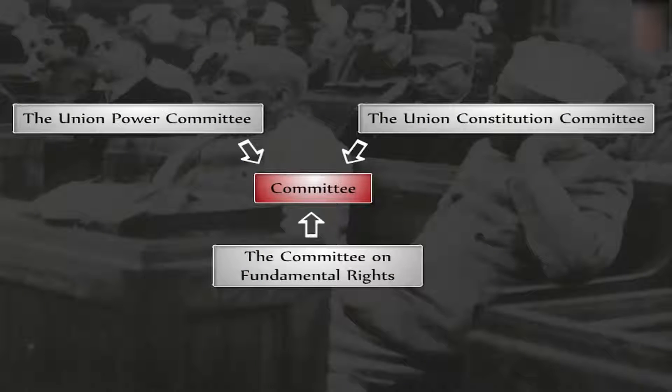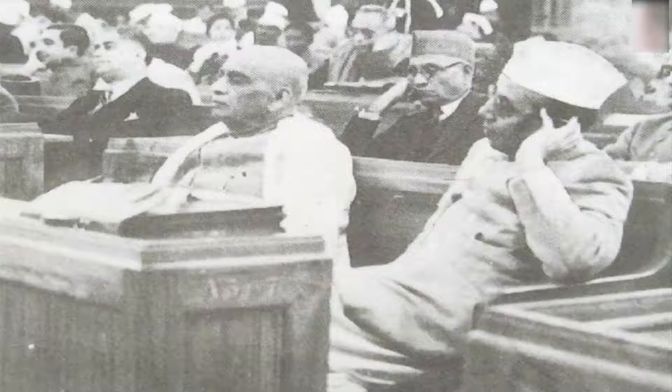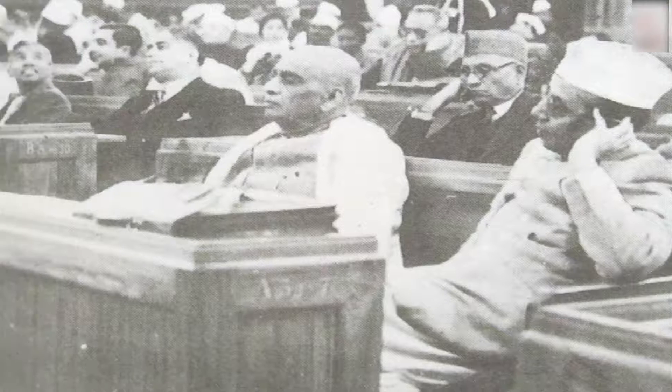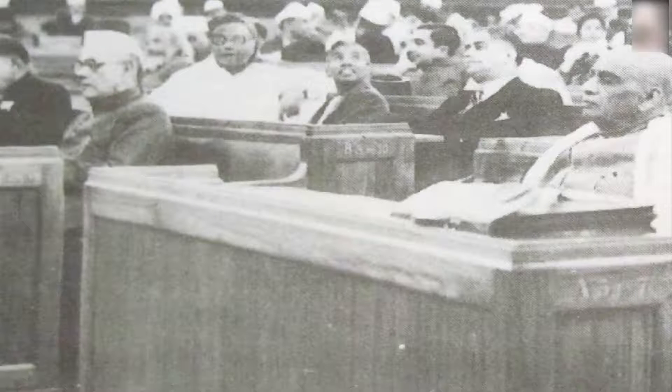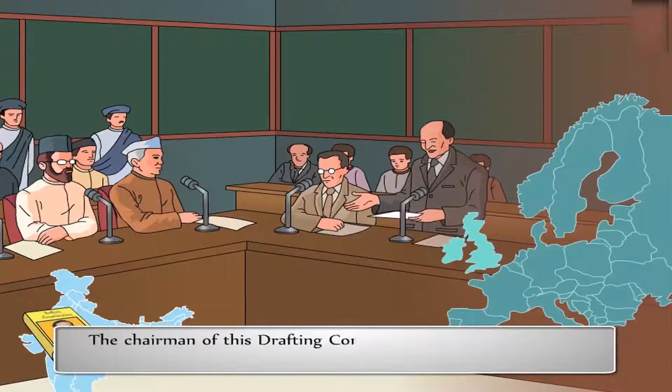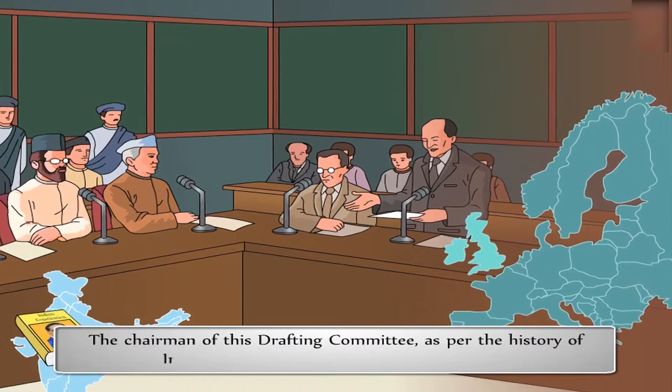The making of the Indian Constitution involved several meetings of three committees: the Union Powers Committee, the Union Constitution Committee, and the Committee on Fundamental Rights. After observing the reports passed by these three committees, the Assembly went on to create a Drafting Committee on 29th August 1947.